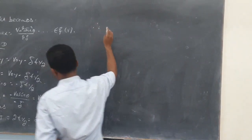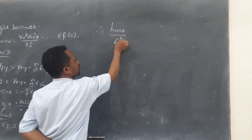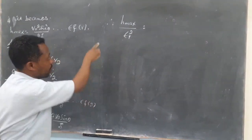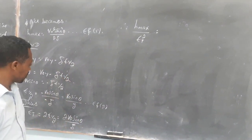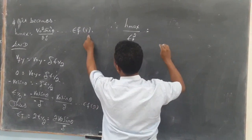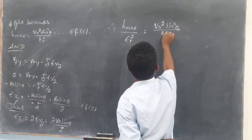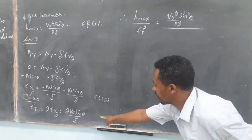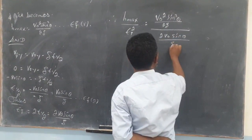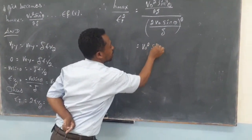Therefore, we are requested to find the ratio of H_max to the total time T_total. We already have both expressions. H_max = V₀²·sin²θ / (2g), and T_total = 2·V₀·sinθ / g. Substituting, the ratio H_max / T_total becomes: [V₀²·sin²θ / (2g)] divided by [2·V₀·sinθ / g].